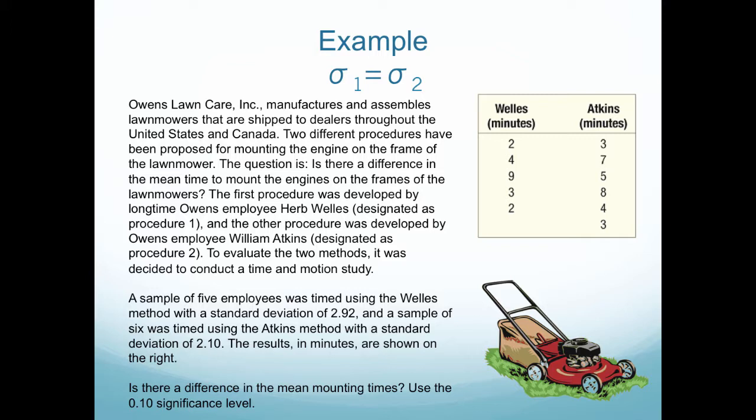To evaluate the two methods, it was decided to conduct a time and motion study. So a sample of five employees was timed using the Wells method with a standard deviation of 2.92. And a sample of six was timed using the Atkins method with a standard deviation of 2.10. The results in minutes are shown on the right. So in this table right here, we have a summary of how long it takes to put the engine on the framework of a lawnmower. So is there a difference in the mean mounting times? Use the 0.1 significance level.